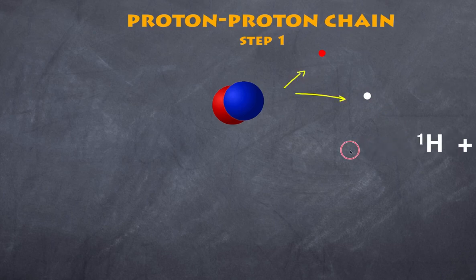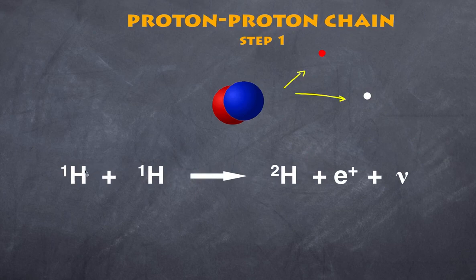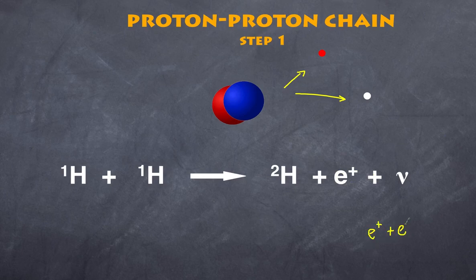In summary, one hydrogen plus one hydrogen converts to deuterium — which is hydrogen with a neutron — plus a positron and a neutrino. The positron doesn't last very long; it encounters an ordinary electron and that annihilation produces two gamma photons. That completes the first step.